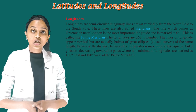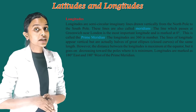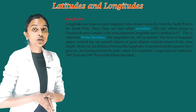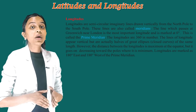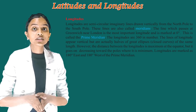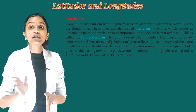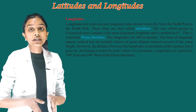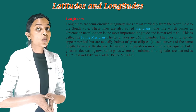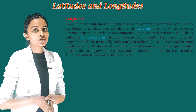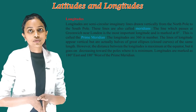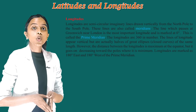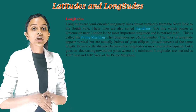Now, longitudes. Longitudes are semicircular imaginary lines drawn vertically from the north pole to the south pole. These lines are also called meridians. The line which passes at Greenwich near London is the most important longitude and is marked at zero degrees. This is called the prime meridian. The longitudes are 360 in number. The lines of longitude appear vertical but are actually halves of a great ellipse — a closed curve of the same length. The distance between the longitudes is maximum at the equator but goes on decreasing towards the poles where it is minimum.